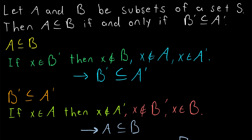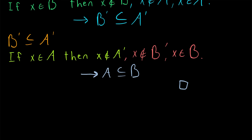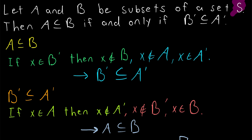And that completes the proof. First, we assumed that A was a subset of B and proved that B complement must also be a subset of A complement. Then, for the second direction, we assumed that B complement was a subset of A complement and showed that forced A to be a subset of B. Thus, if A and B are subsets of a third set S, then A is a subset of B if and only if B complement is a subset of A complement. I hope this video helped you understand this simple set theory proof. Let me know in the comments if you have any questions, need anything clarified, or have any other video requests. Thank you very much for watching. I'll see you next time, and be sure to subscribe for the swankiest math lessons on the internet.